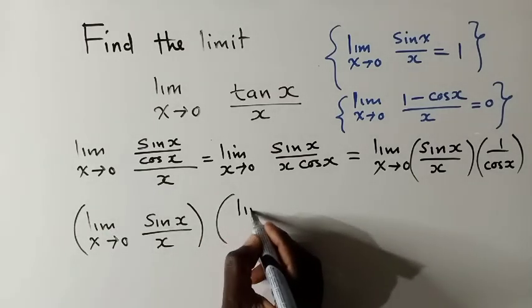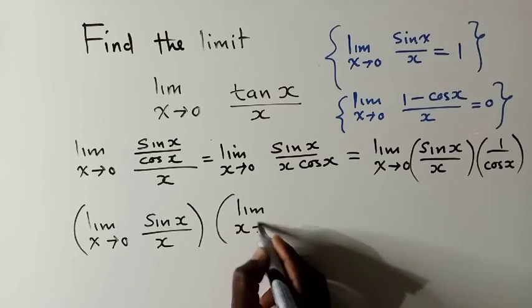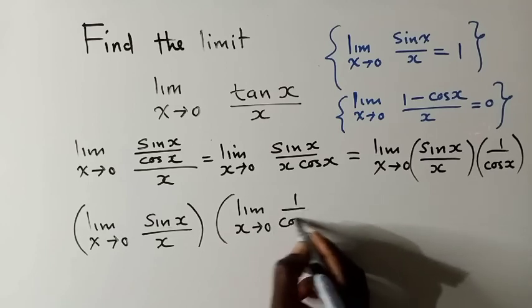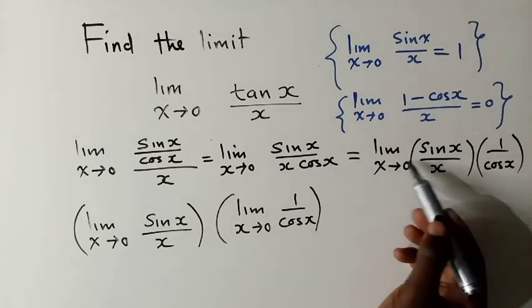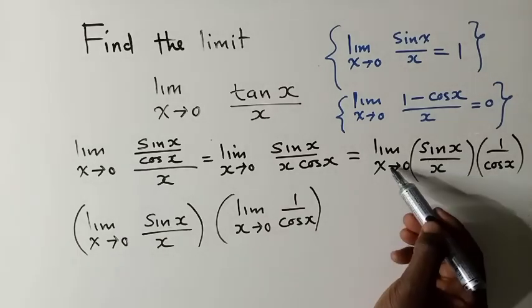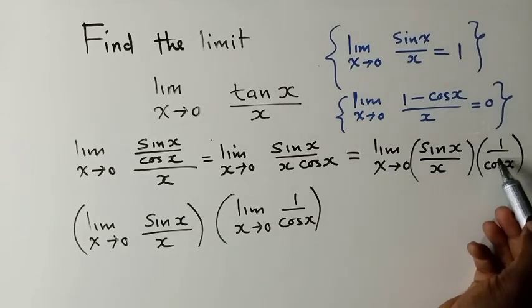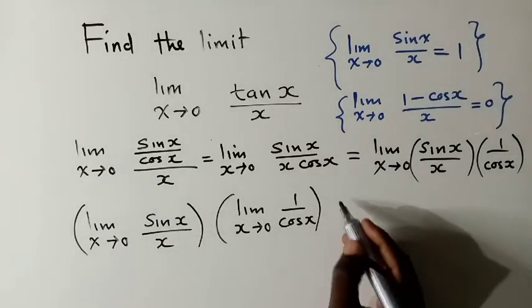multiply by limit as x approaches 0 of 1 over cos(x). So, I'm just separating: this moves alone and this also. And there is a multiplication. That's why I've applied the brackets.